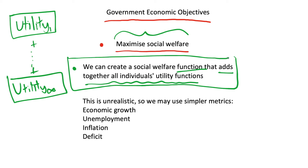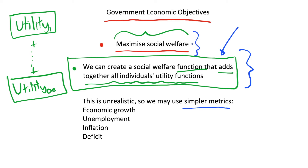It's obviously very difficult to add together all of these, so this ideal scenario of coming up with a social welfare function is very difficult to do. In reality, what we see — and what you've probably come across — is that we have simpler metrics or simpler governmental targets, at least in developed countries: a set of objectives that a government tends to try to meet. These are meant to proxy or be a way of maximising social welfare indirectly.